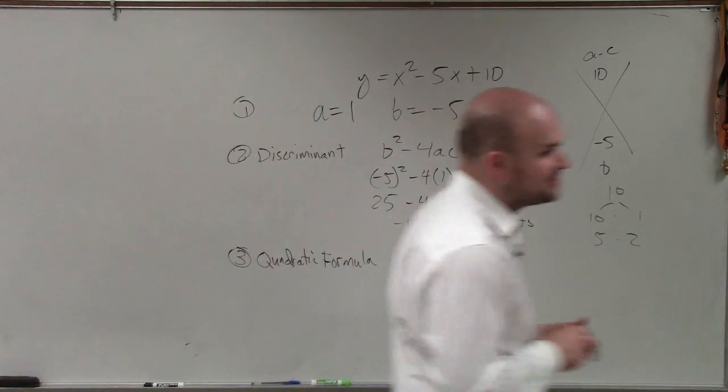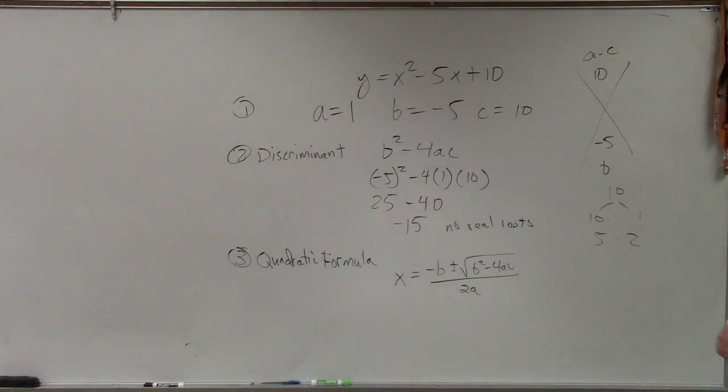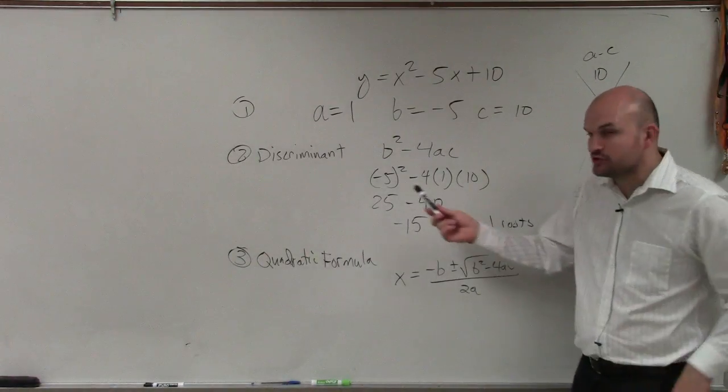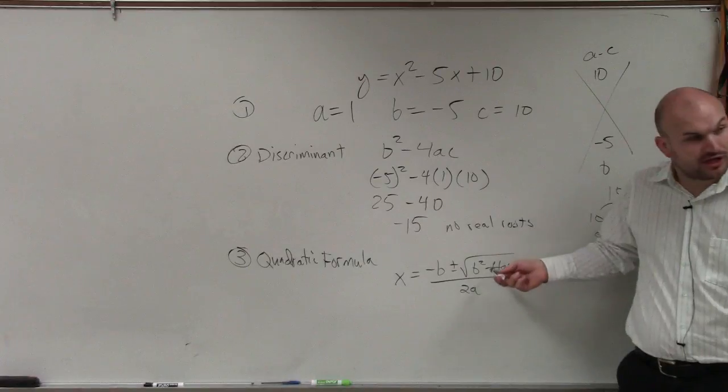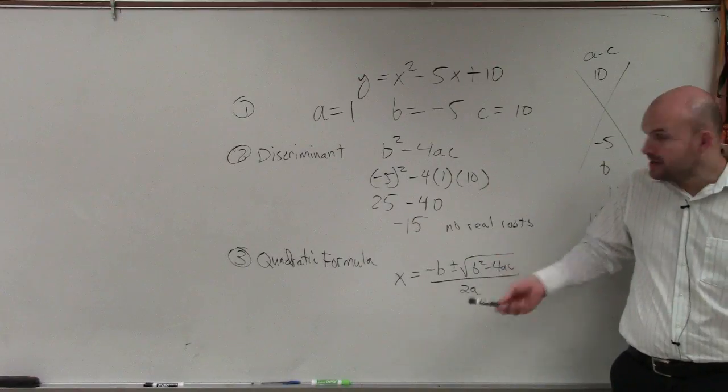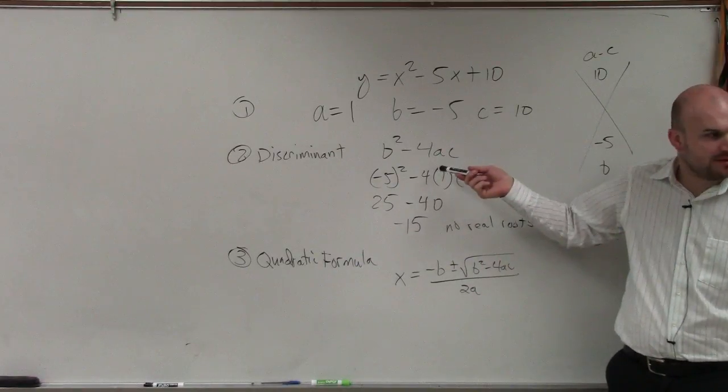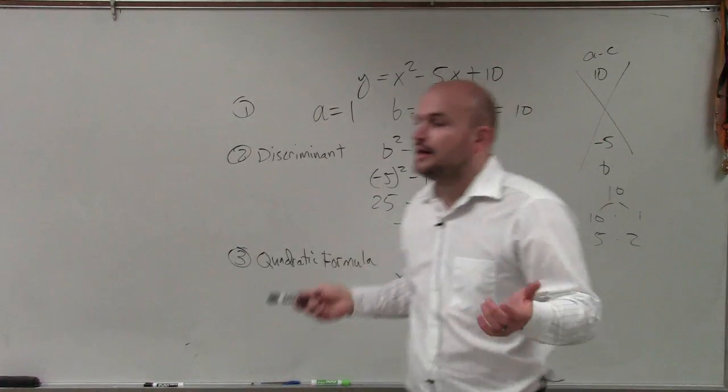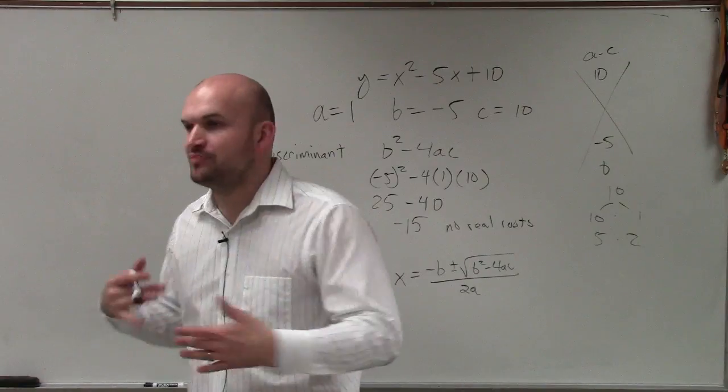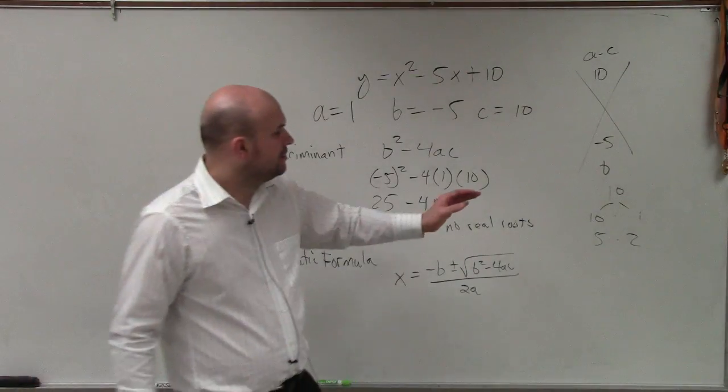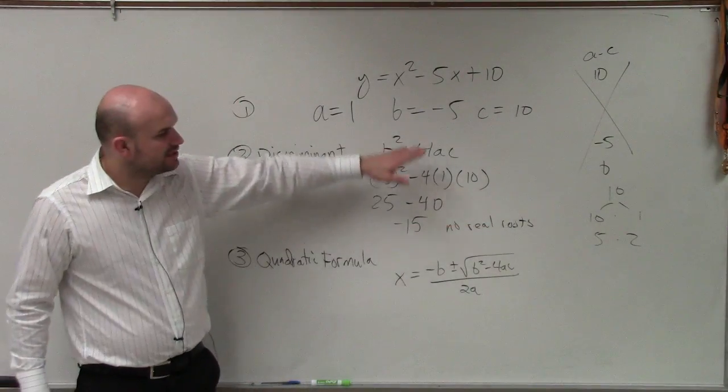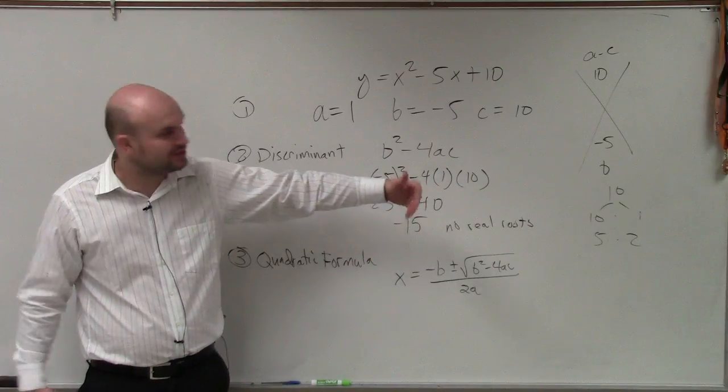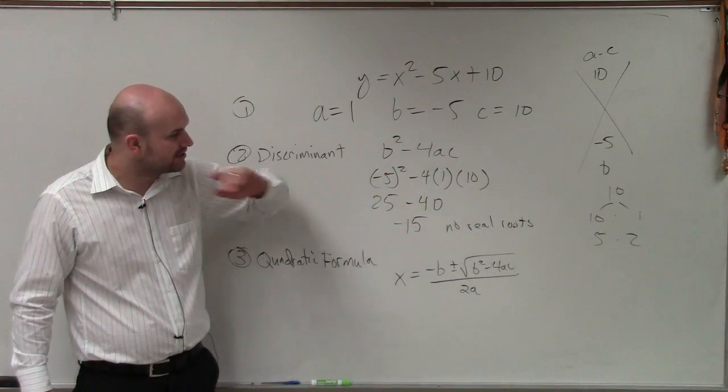Now, a couple things that I want you guys to understand about this quadratic formula is the discriminant is what is under the square root. So we already solved part of this problem when we found out what the discriminant was. So rather than just taking the whole formula and just plugging in numbers, we went ahead and determined the discriminant. And I'll explain why we're going to do that again, as I mentioned in another video.